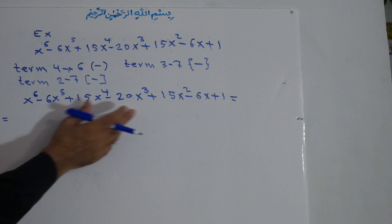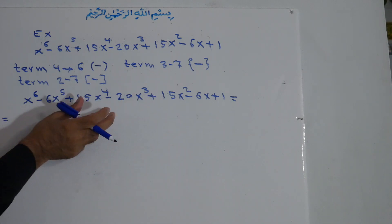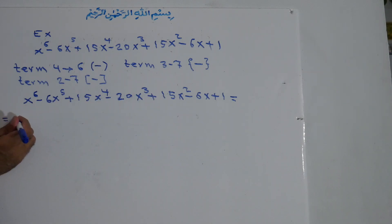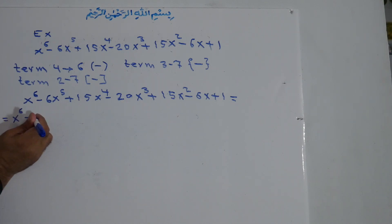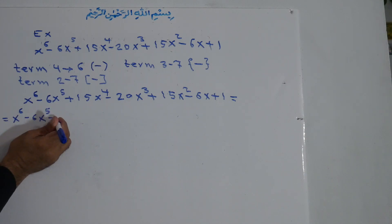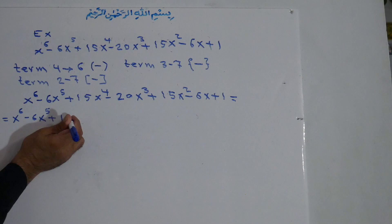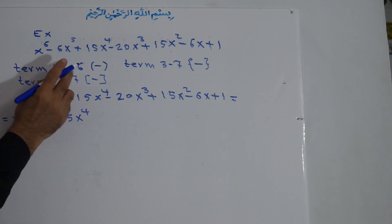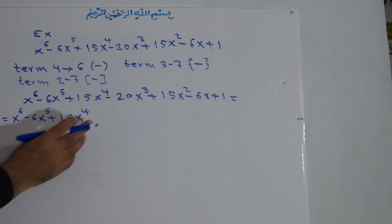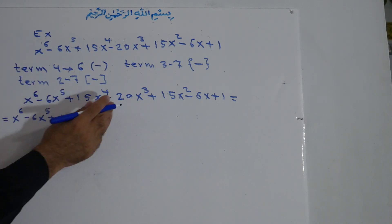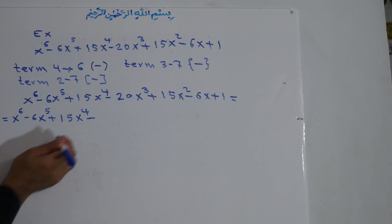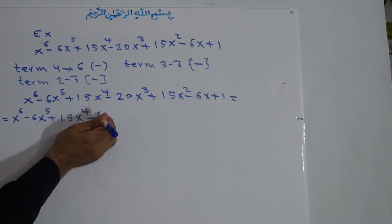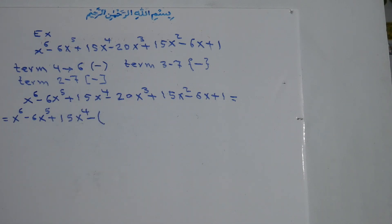There are 7 terms in total. Terms 1, 2, and 3 do not change, so we write them the same: x to the power of 6, minus 6x to the power of 5, plus 15x to the power of 4. Now the small bracket starts from term 4 with a negative sign. Since the sign in front of the bracket is negative, all signs inside will be changed.